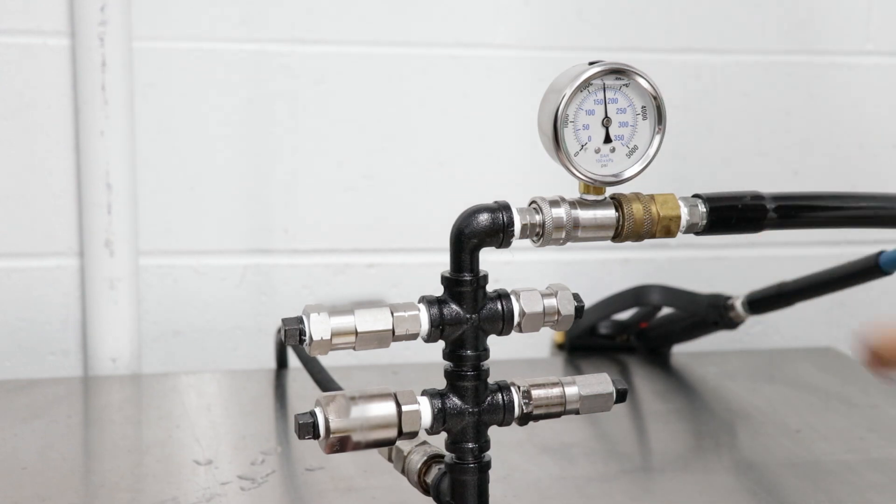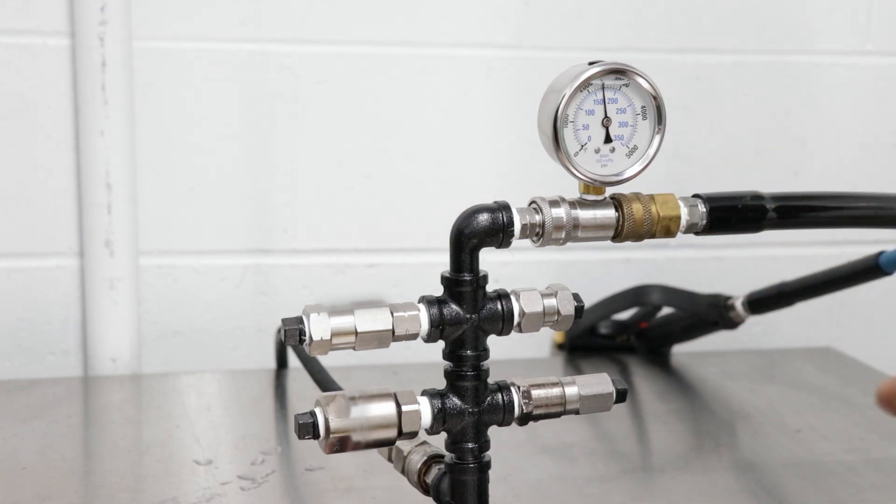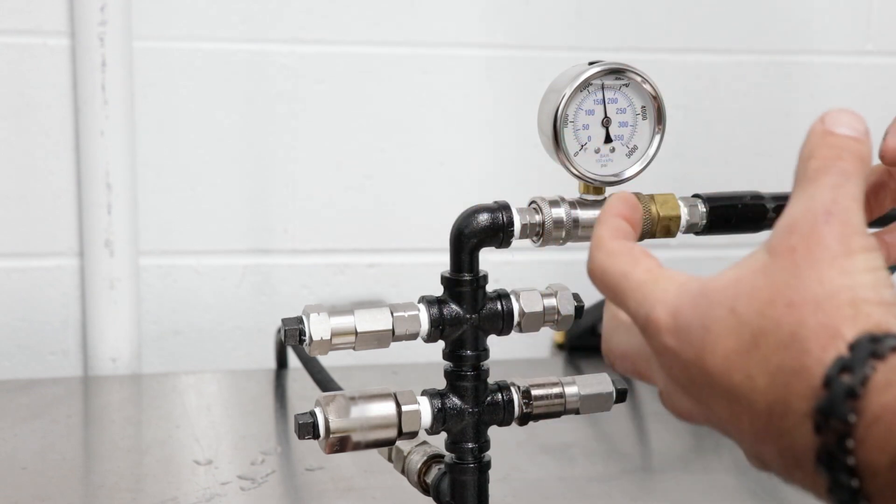But again, a quick coupler is not meant to be a swivel. It's just the compression connection, and the o-ring is what really seals it. With pressure, it's just locked into place.